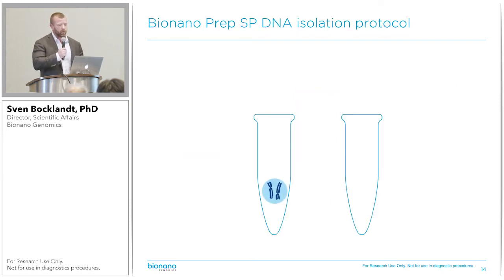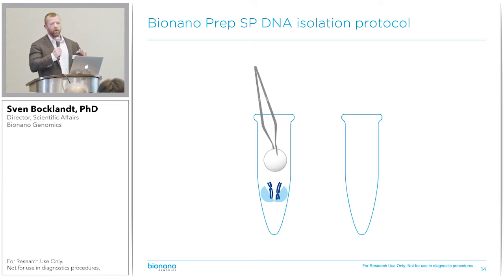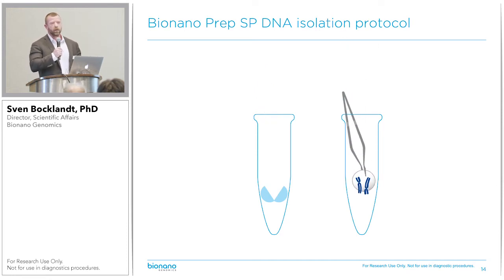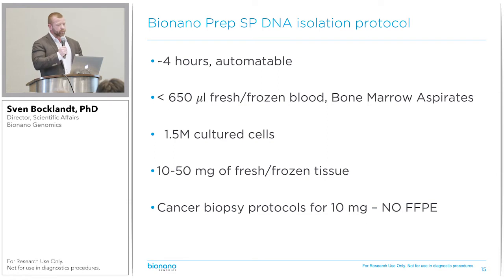So we developed our own protocols. Our latest is the BioNanoPrep-SP DNA isolation protocol, where we simply lyse cells in solution and then grab onto the DNA with a disk that can hold onto micrograms of DNA. You wash and elute in a clean tube to get extremely long, extremely clean DNA. This is an automatable process — right now it takes about four hours. We can work with less than 650 microliters of fresh or frozen blood, as well as fresh or frozen bone marrow aspirates.